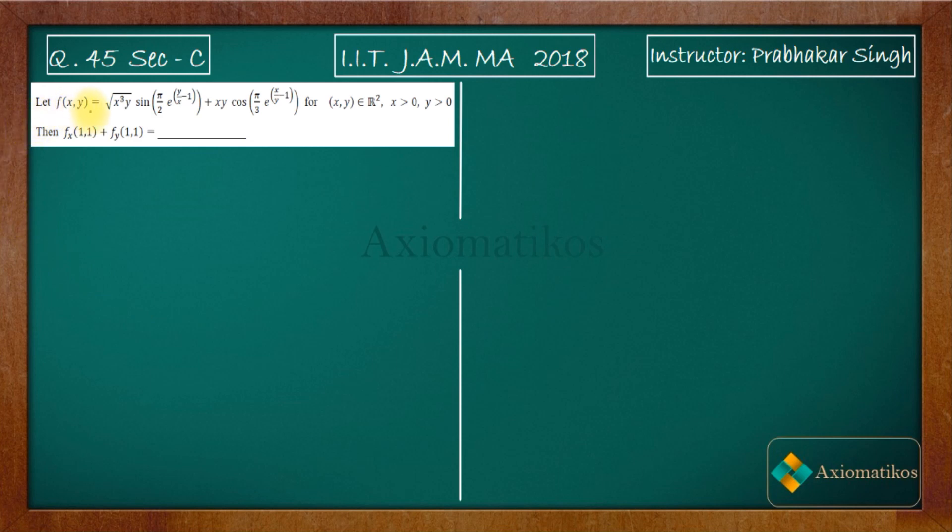Let f(x,y) equal this given function. The question is asking for partial derivatives: ∂f/∂x and ∂f/∂y at the point (1,1).